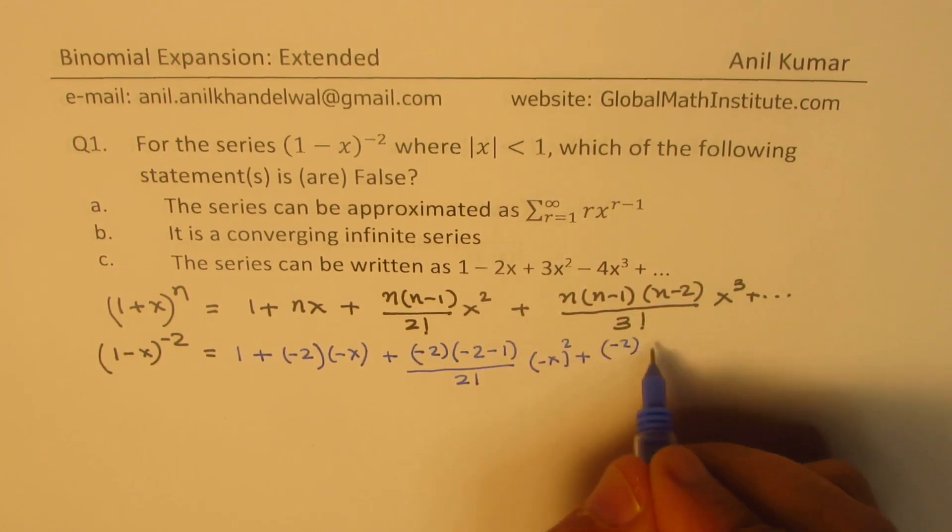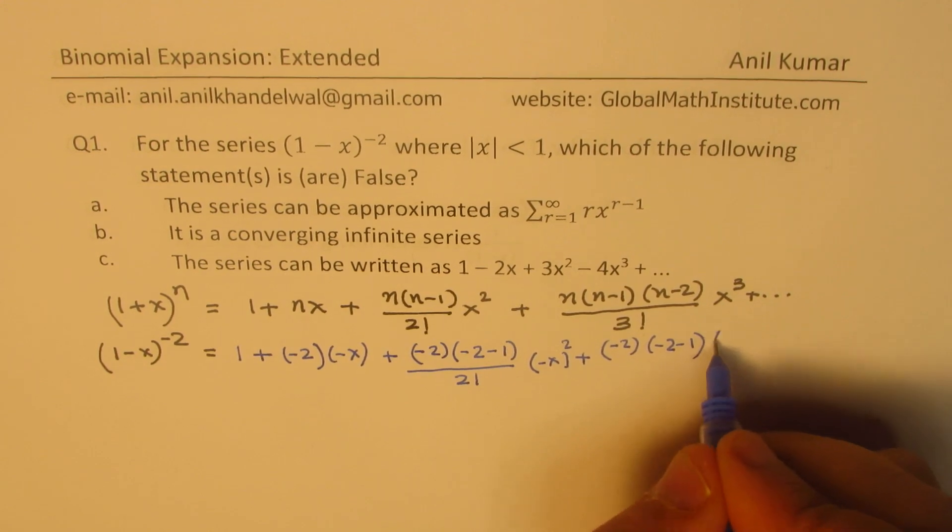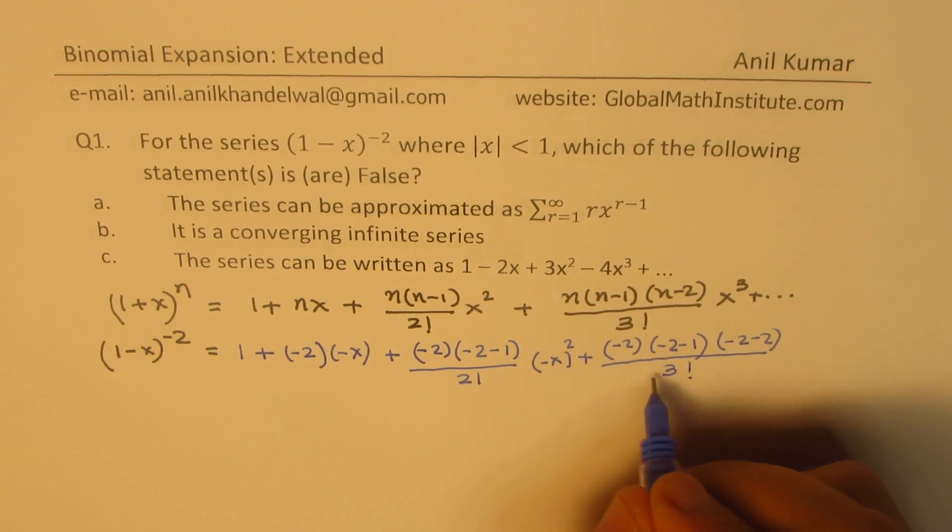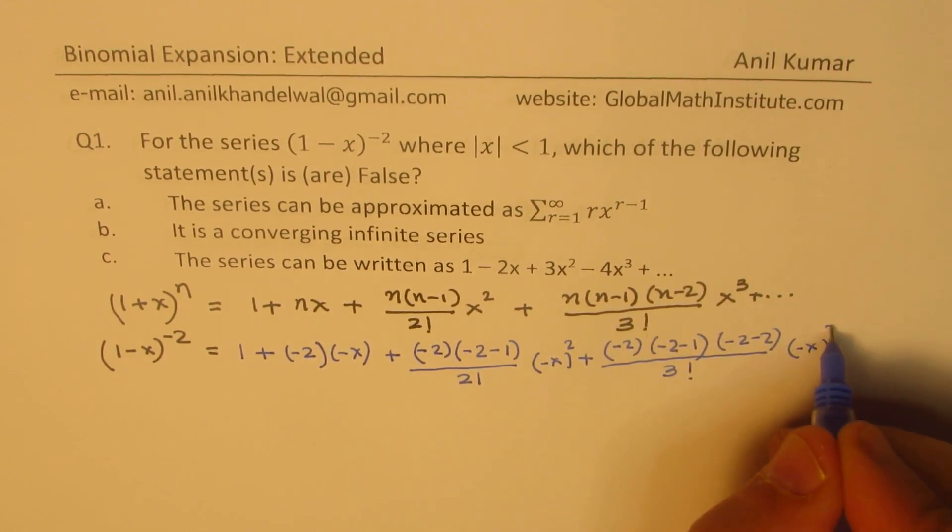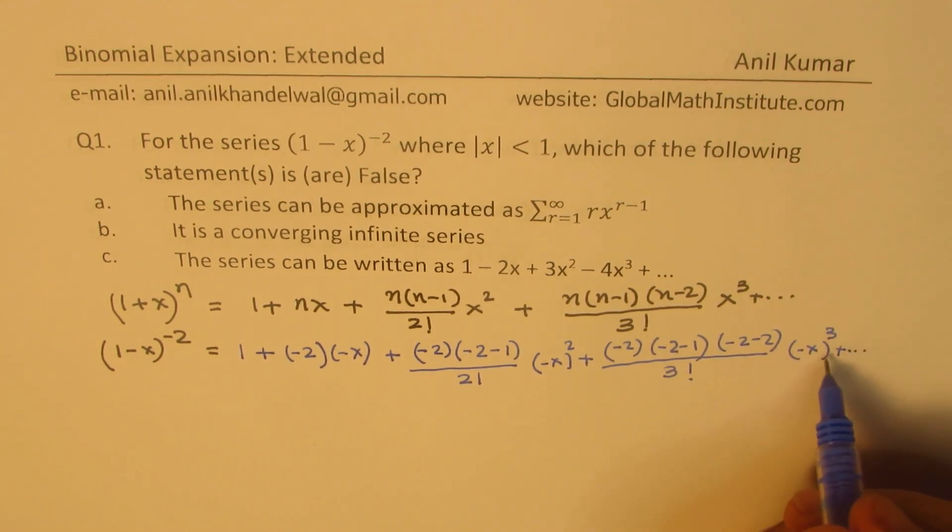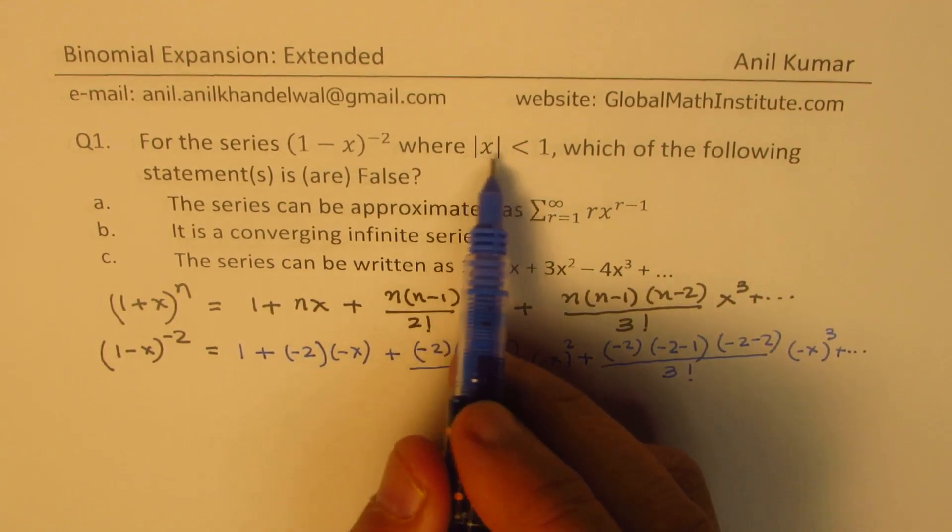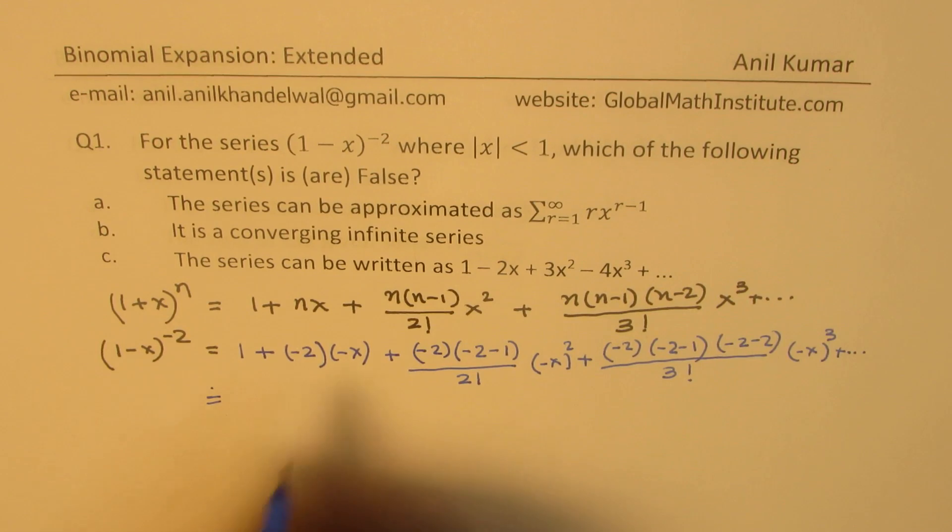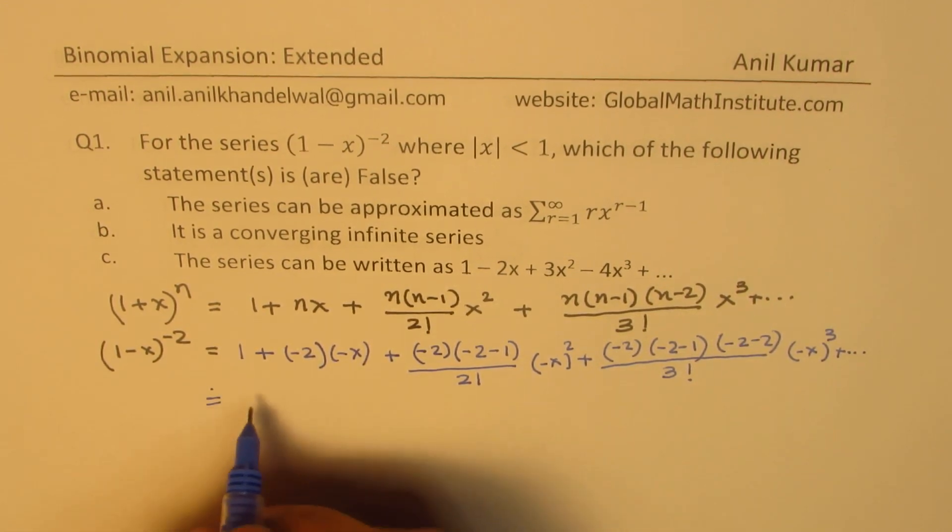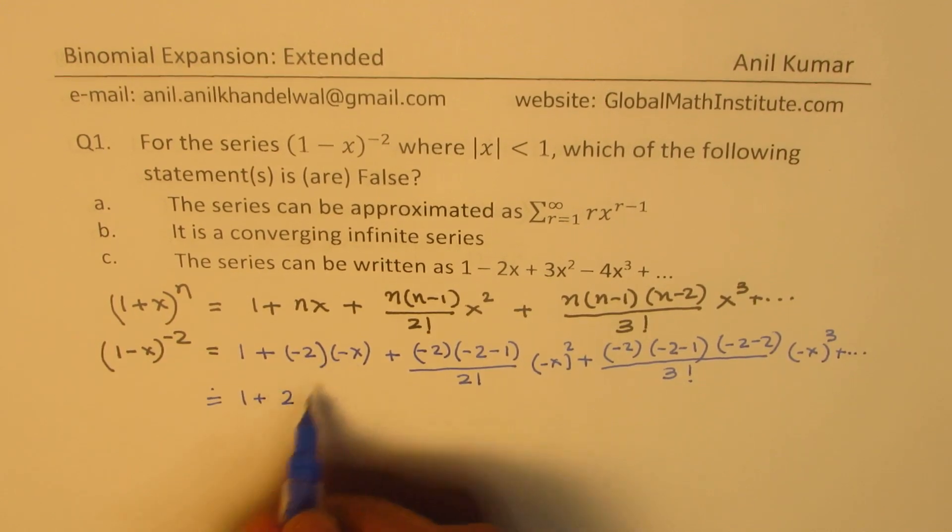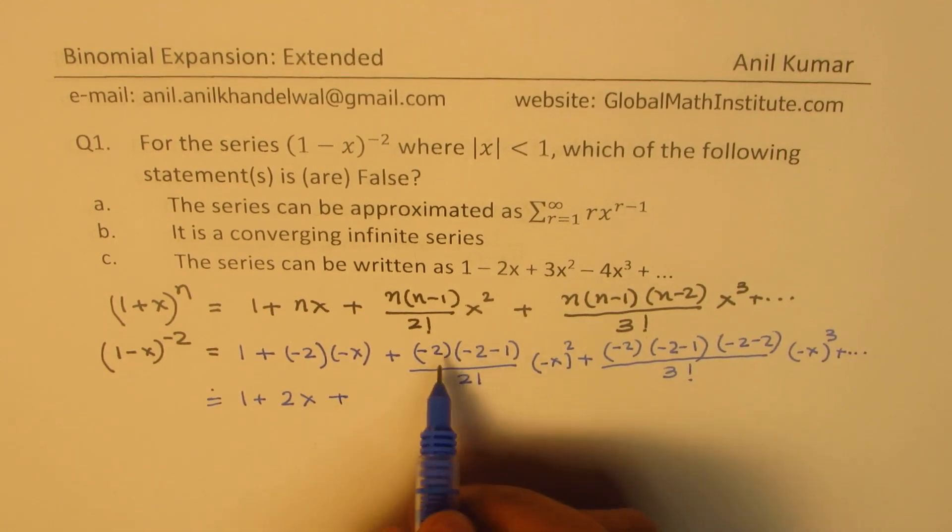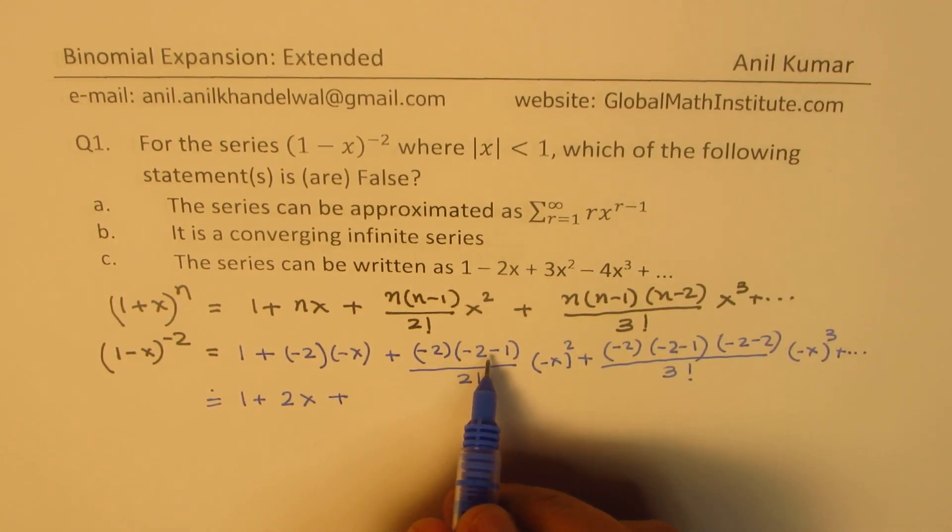Now, as these terms' powers are increasing and |x| < 1, they can be neglected. Let me rewrite this. When we multiply, I get 1 + 2x, negative times negative becomes positive. And here we have 2 times 3, and 2 and 2 cancel, so we get 3x².